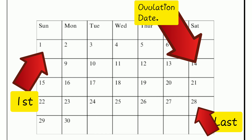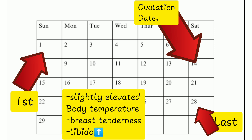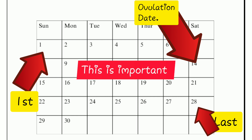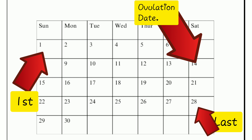Coupled with other symptoms which are usually indicative of ovulation — which include slightly elevated body temperature, breast tenderness, and an increase in sexual desires. If ovulation occurs around the 14th day of your cycle, the days before the ovulation date are going to be the fertile days.